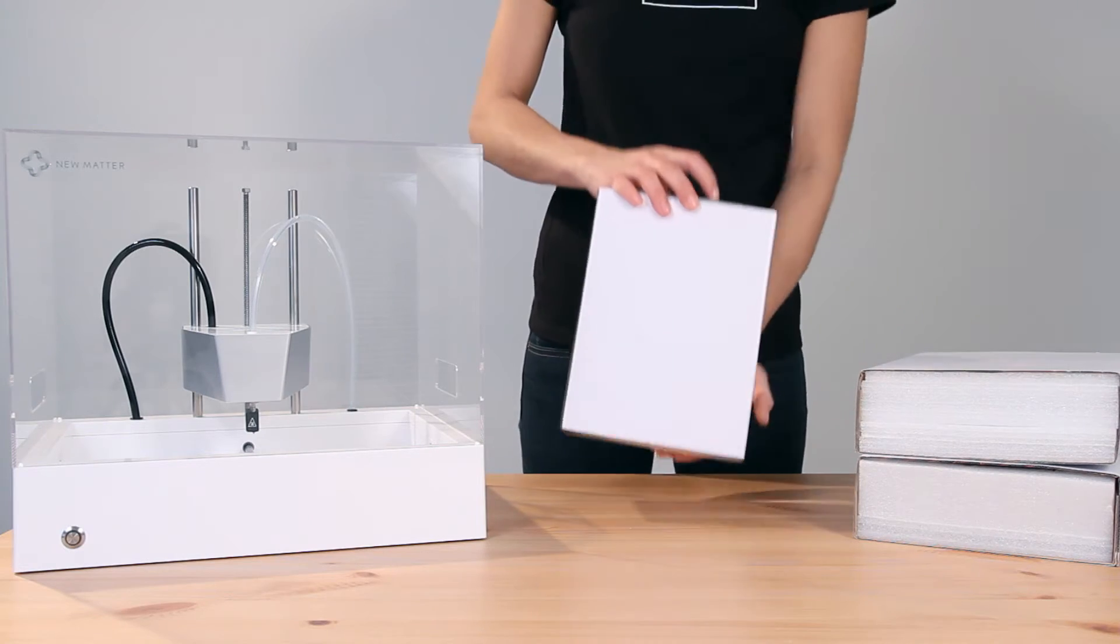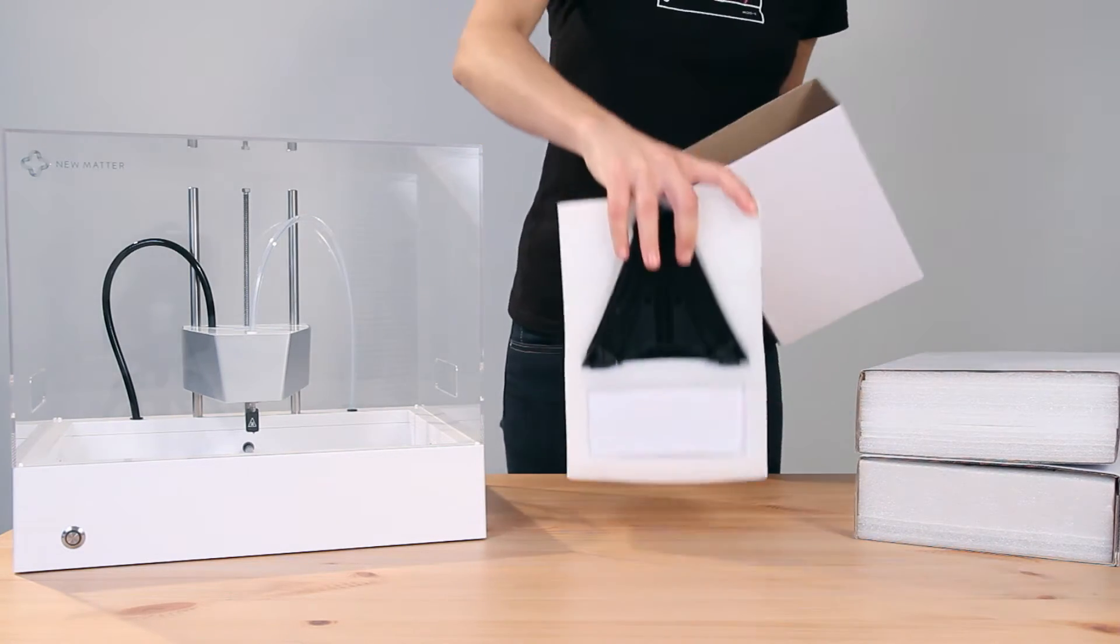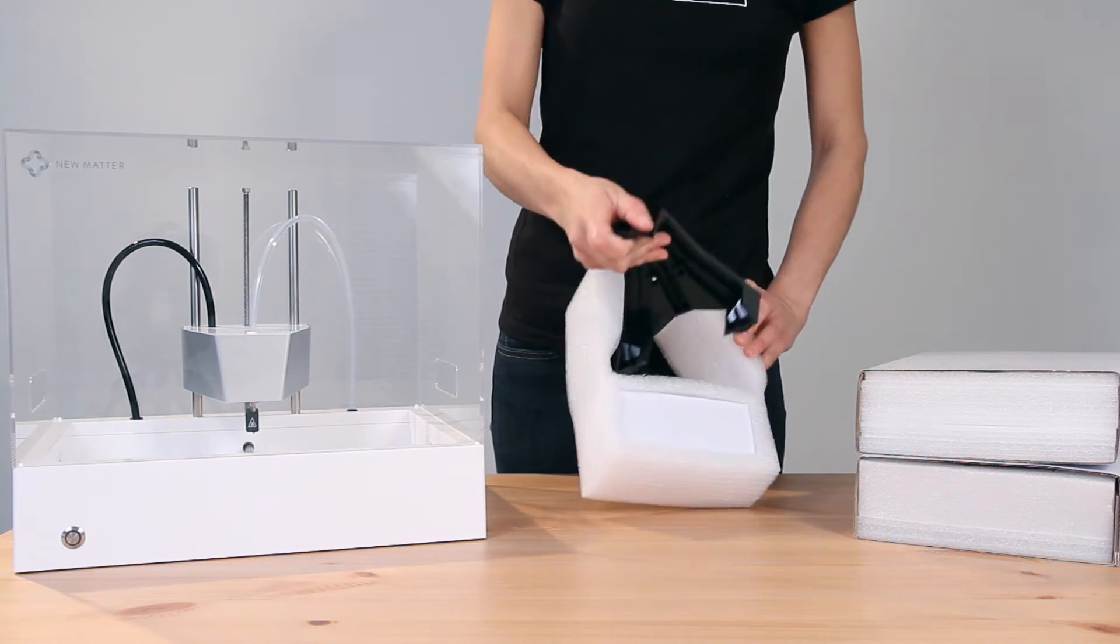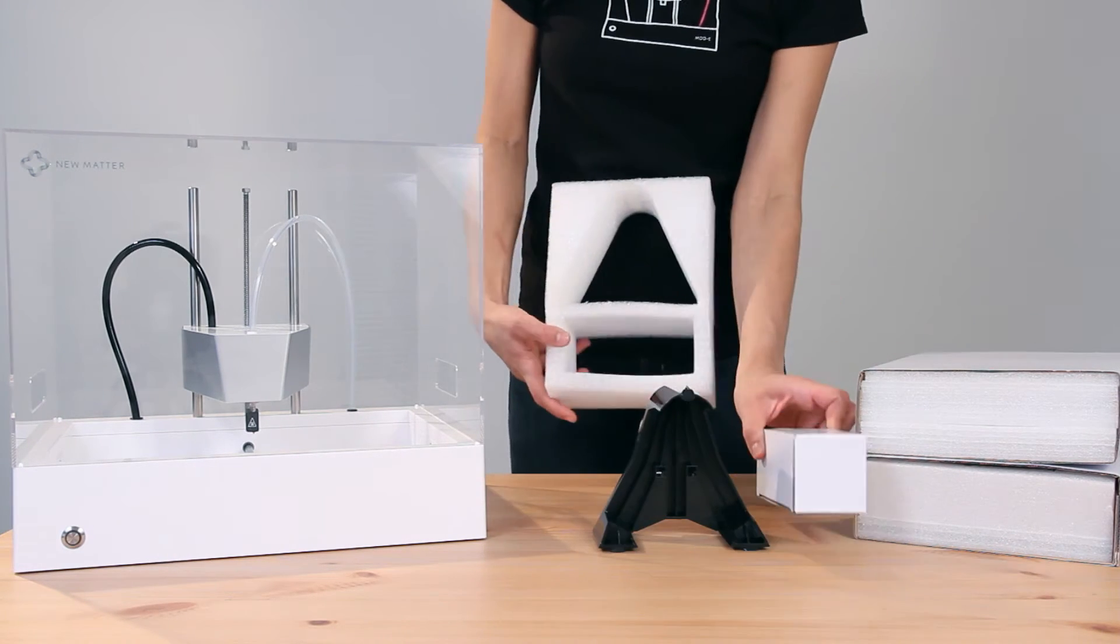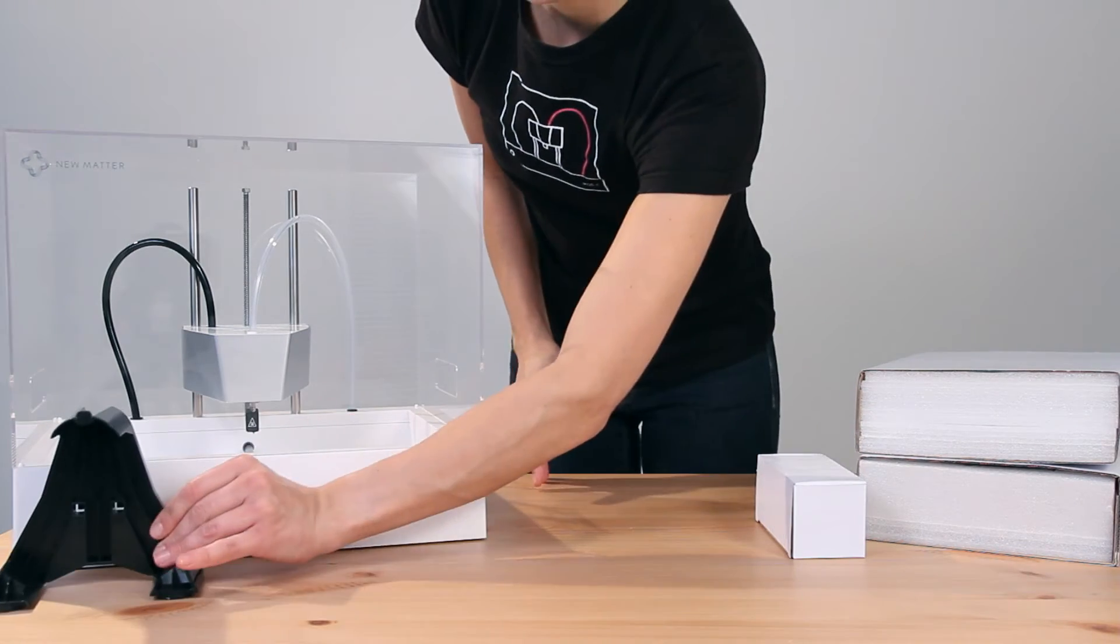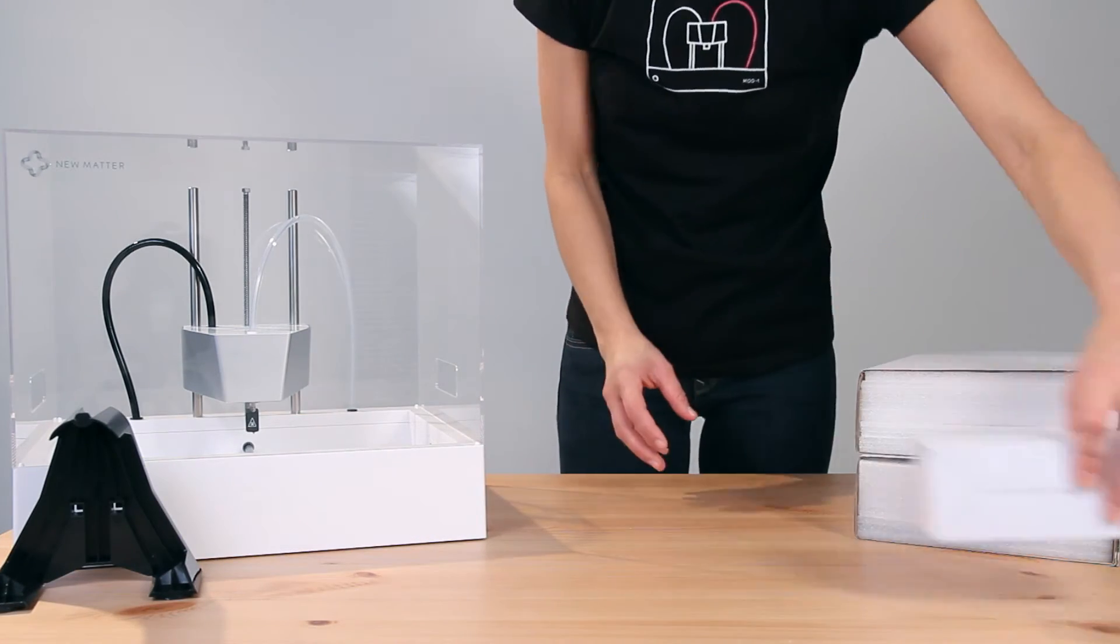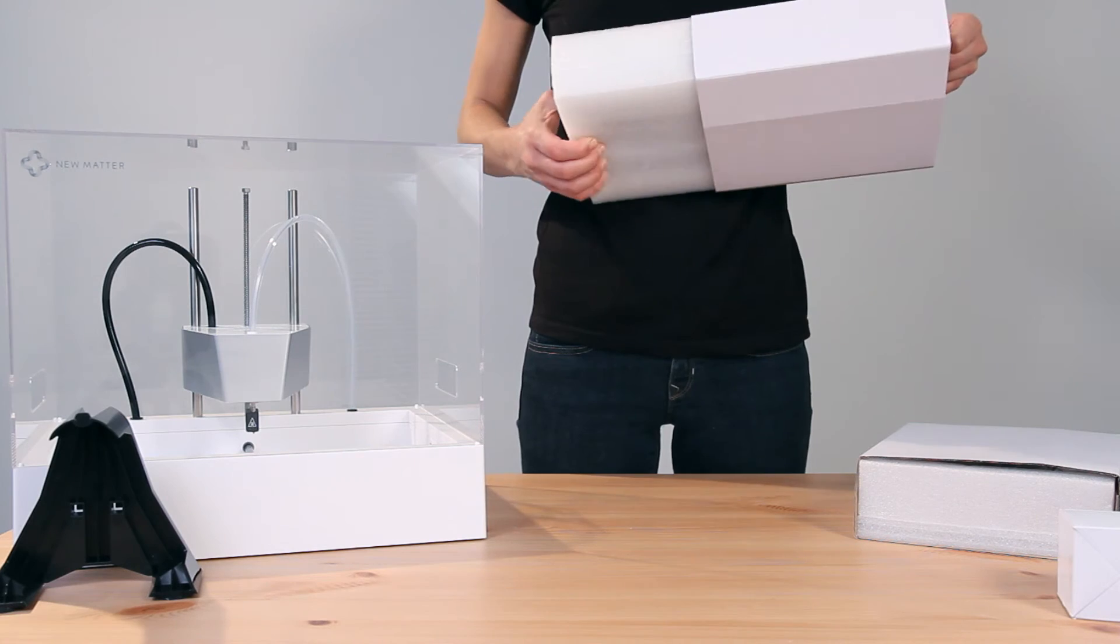These are the boxes that we pulled from inside the printer. These are our larger accessories. First, here's our filament spool holder and hiding below him is our AC power adapter. Put the AC power adapter off to the side. We'll be using him later.